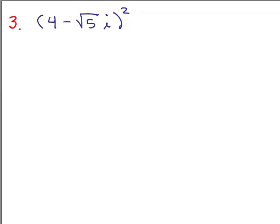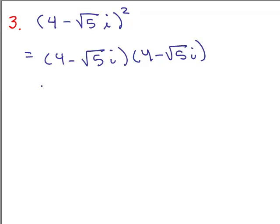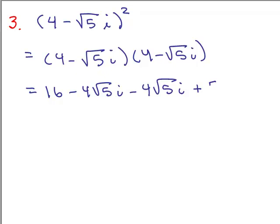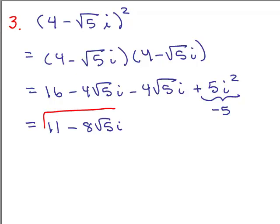Now we're squaring something, so I'll write it out: 4 minus square root of 5 i, times another 4 minus square root of 5 i. These are not conjugates, so we use FOIL. 4 times 4 is 16. The outer term is minus 4 square roots of 5 i. The inner is another minus 4 square roots of 5 i. The last term is square root of 5 i times square root of 5 i, which is plus 5i squared, and that's negative 5. So I really have 16 minus 5, which is 11. The two middle terms give the imaginary part: negative 8 square roots of 5 i.